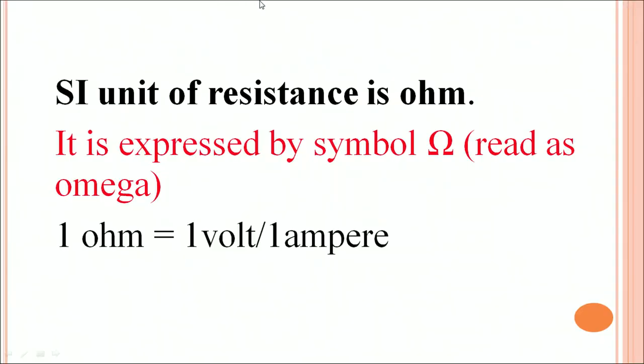The SI unit of resistance is ohm. It is expressed by the symbol Ω, read as omega. 1 ohm equals 1 volt upon 1 ampere.